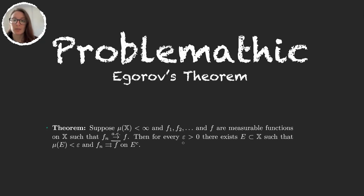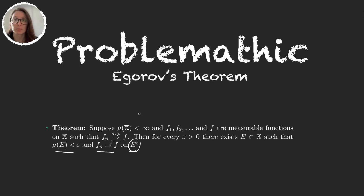Basically we can take any small number epsilon and there will exist some set with measure epsilon or smaller, for which our sequence will converge in its complement. So there will be a very large set E complement where our sequence converges uniformly. Finite measure spaces are usually very well behaved, and you might come across Egorov's theorem in probability theory, because probability spaces are the basic and trivial example of a finite measure space. The condition of having a finite measure space is essential and we will work on an example of this in the next video.